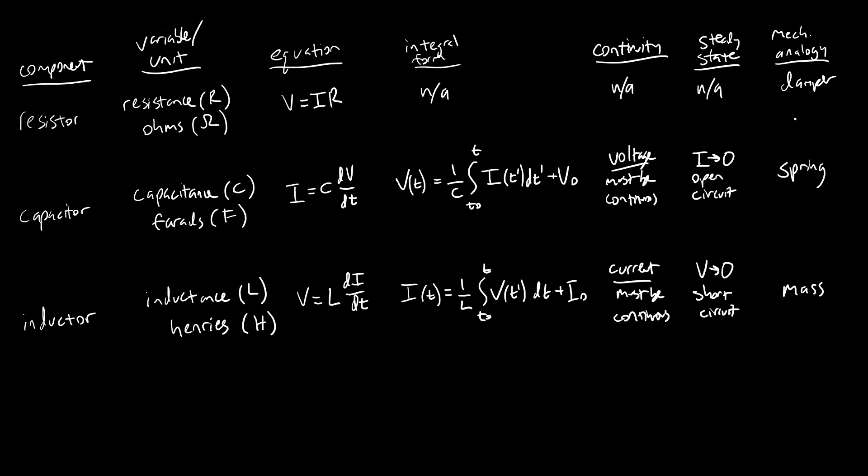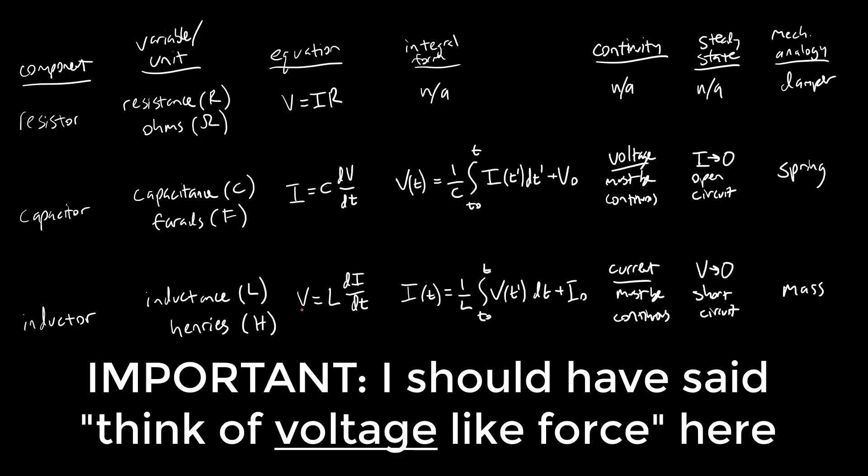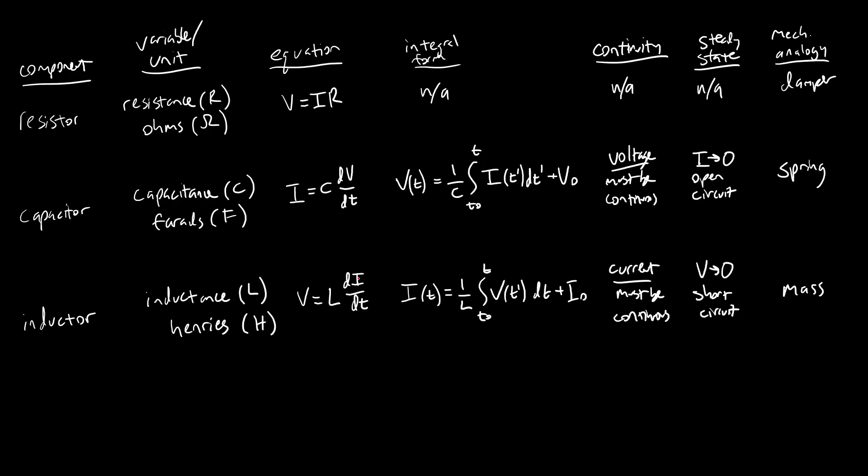And you can sort of see how this comes out in the equations. So this equation for this inductor, V equals L dI dt. If you think of current as velocity, then the derivative of current, of velocity, is acceleration. So this looks an awful lot like F equals ma.